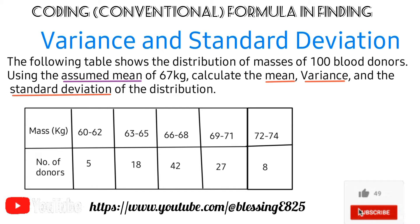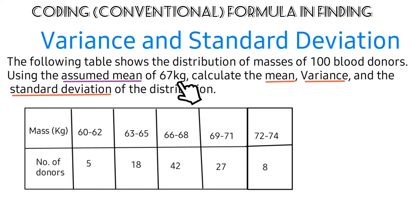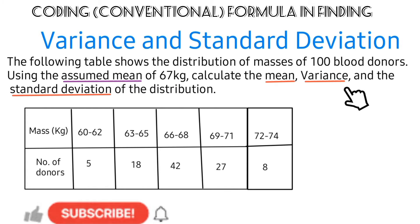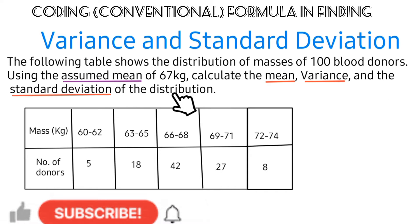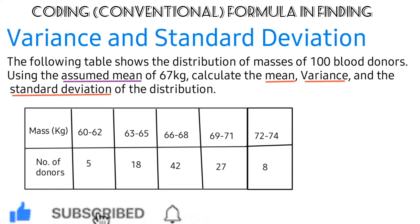Welcome to my tutorial. Today's video will focus on using the coding formula in finding measures of dispersion like the variance and standard deviation. The following table shows the distribution of masses of 100 blood donors. Using the assumed mean of 67 kg, calculate the mean, variance, and standard deviation of the distribution. If you are new to this channel, kindly hit the subscribe button and turn on the notification bell.